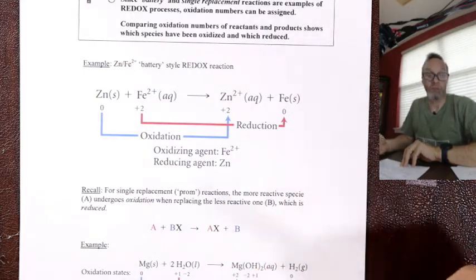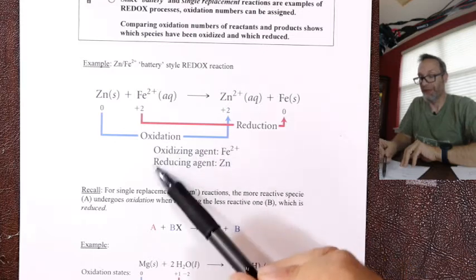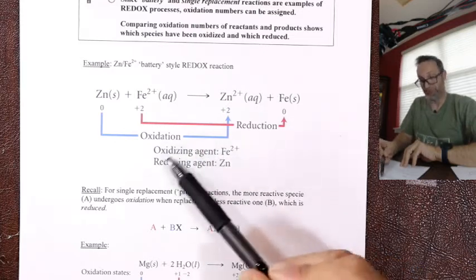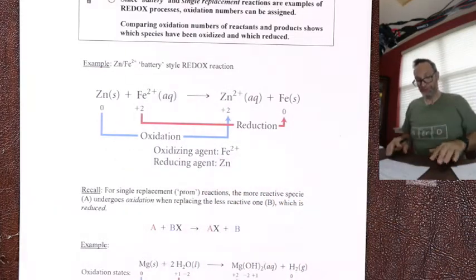Iron went from a plus two to zero — so it got more minus. Reduction is gain. If I want to do agents, I just switch the names. There's a battery in process.